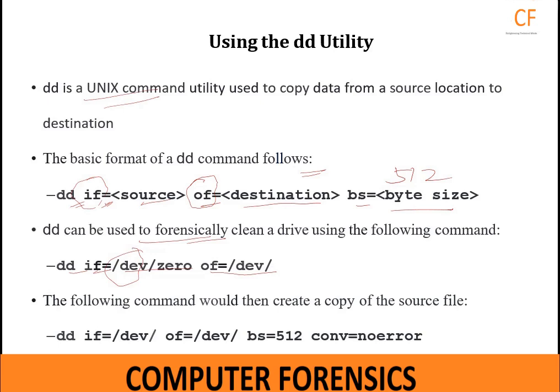This command confirms that the drive now contains only zeros. The following command would then create a copy of the source file: DD IF=/dev/[source] OF=/dev/[destination] BS=512 CONV=noerror. CONV=noerror is used to skip blocks with bad data.